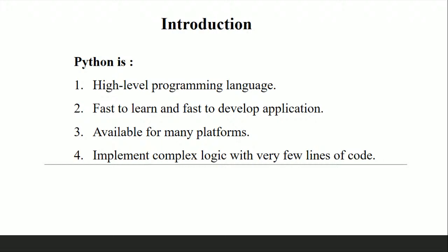Python is introduced as a high-level programming language — fast to learn, fast to develop applications, available for many platforms, and able to implement complex logic with very few lines of code. For example, doing image processing in C or C++ would require around 100 lines just to access the camera because there are no high-level header files like 'import cv2'. With Python, you can access the camera and do image processing within 10 to 15 lines. That is how Python became more familiar than expected.